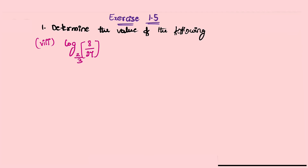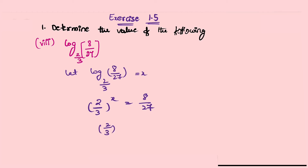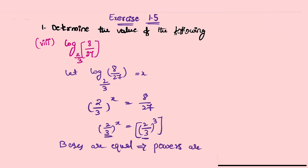Eighth problem: log base (2/3) of (8/27). Let log base (2/3) of (8/27) equal to x. Exponential form: (2/3)^x = 8/27. Now 8/27 = (2/3)^3. Bases are equal so powers are equal: x = 3. Therefore log base (2/3) of (8/27) equals 3.